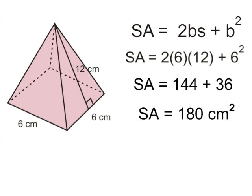So when calculating the surface area of any square pyramid, remember, you are really only looking for two values to plug into your equation: the value for b and the value for s.